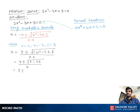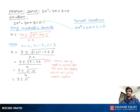Then, we can write 3 plus or minus square root of negative 15, over 4. We can also write this as 3 plus or minus square root of 15 times square root of negative 1, where square root of negative 1 is denoted as i. So this becomes 3 plus or minus square root of 15 times i, over 4.